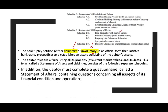In addition to this form, the debtor will have to complete a questionnaire called the Statement of Affairs, containing questions concerning all aspects of its financial condition and operation. Because the numbers may not capture everything, the court and the creditors want to learn a little bit more about the debtor.